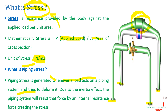Piping stress is generated whenever a load acts on a piping system — whether internal pressure or external forces — and tries to deform it. Due to the inertia effect, the piping system resists those forces by creating internal resistance, which is the stress. If that internal resistance is less than the external force, the pipe will get deformed. If internal resistance is greater, there will be no deformation in the system.